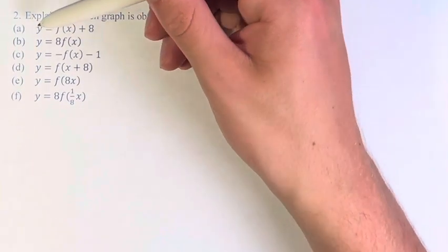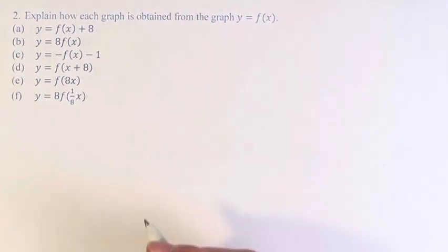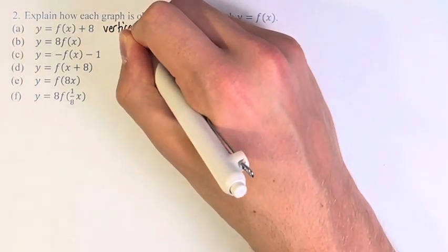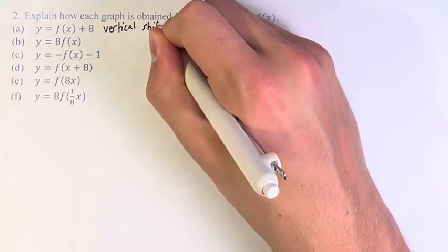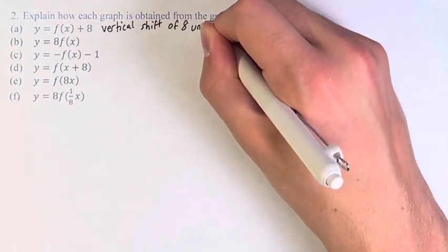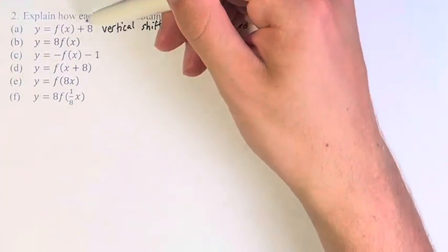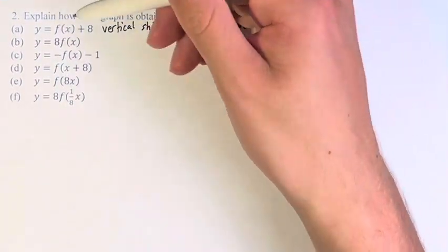First, we have y equals f of x plus 8. This is a vertical shift of 8 units upward. When the addition is done outside of the function, it is vertical.